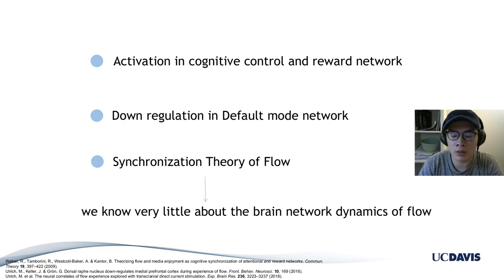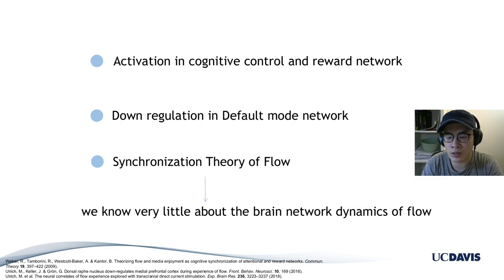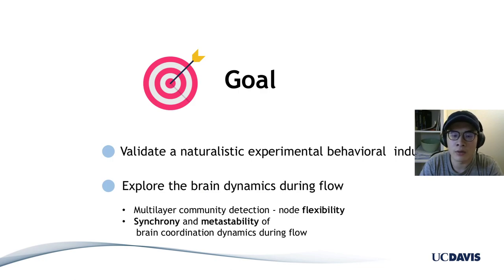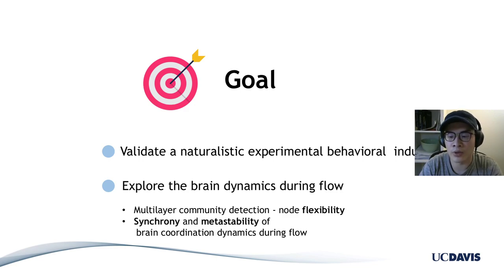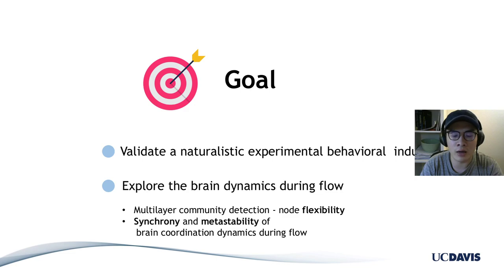But these findings do not tell us too much about brain dynamics, and we are still unsure about how the brain evolves as a network or as a complex system. Our main goal is to answer this question. We have two goals: the first is to validate the naturalistic experimental behavioral induction. The second is to explore brain dynamics during flow using two approaches: multi-layer community detection on the dynamic functional brain network to calculate node flexibility, and calculation of synchrony and metastability using a brain coordination dynamics model.